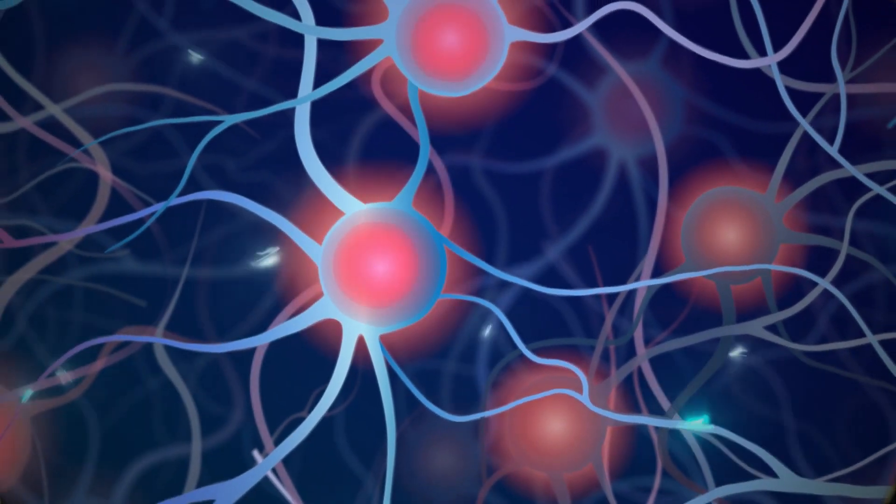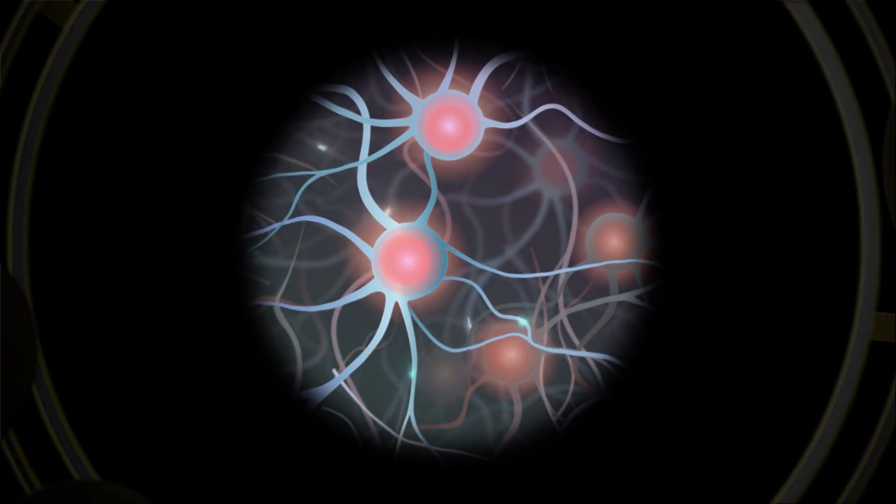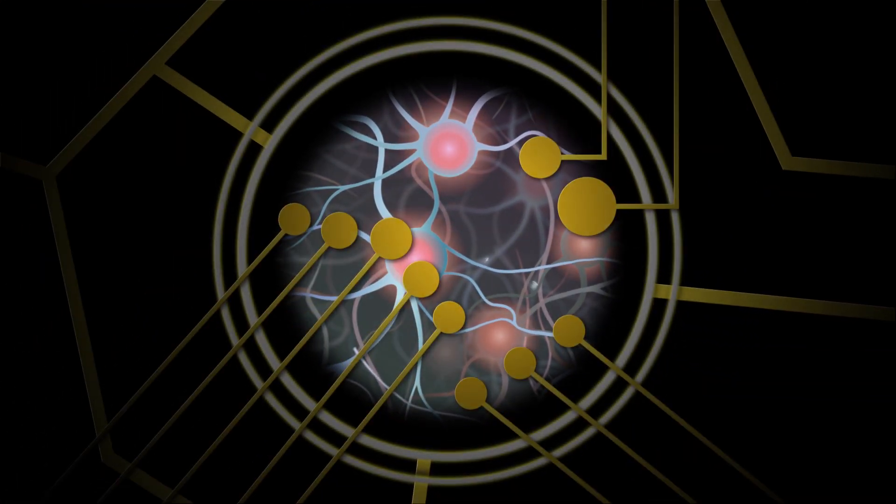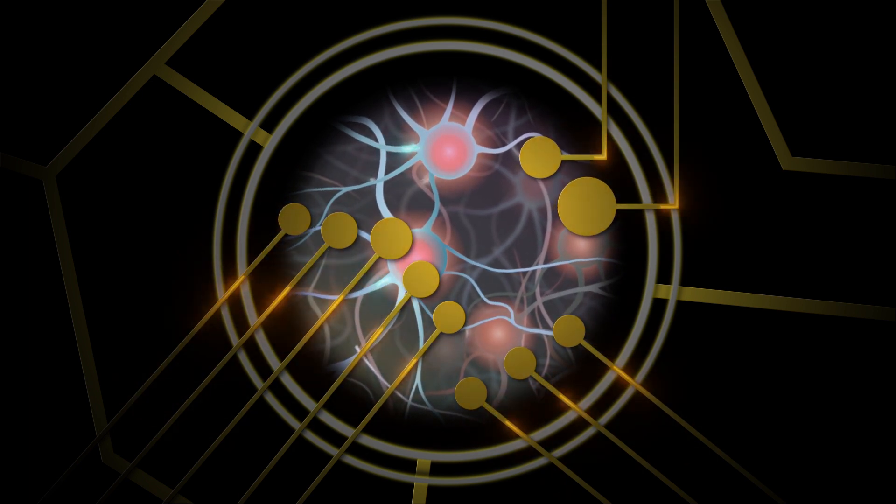When neurons communicate with one another, they evoke small electrical signals that are picked up by these microelectrodes. These microelectrodes allow us to listen in on the conversation of the neurons.